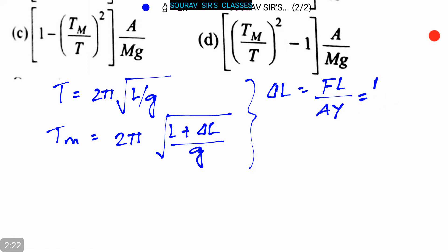Putting the value of del L in TM, we can rewrite it as TM equals 2π root over L plus MGL divided by AY whole divided by G. Now solving the equation - this is equation 1 and this is equation 2.